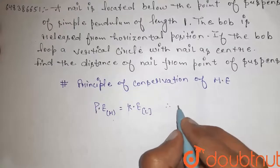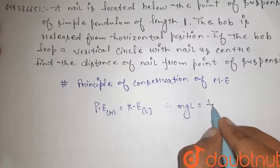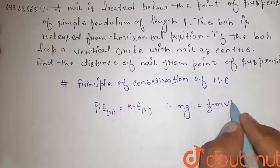That would be MgL equals half MV squared.